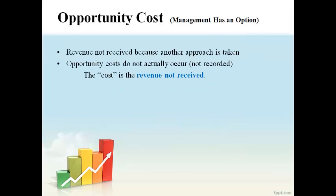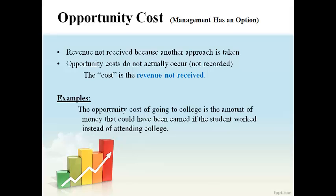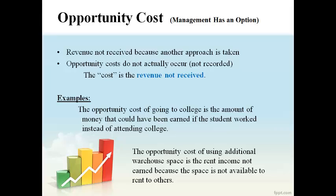Let's spend a little time discussing other terminology used to describe cost. An opportunity cost is a situation where a decision is made and a benefit is not received. An opportunity cost is not really a cost — it is revenue that is not earned because of a decision that is made. Just remember that it is revenue that is not earned because another approach is taken. A good example is a student going to college and the amount of money they could have earned but don't receive because they attend college. Another example is using additional warehouse space — the rent income you can't collect because you are using the space is an opportunity cost.